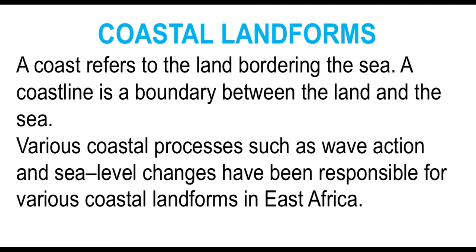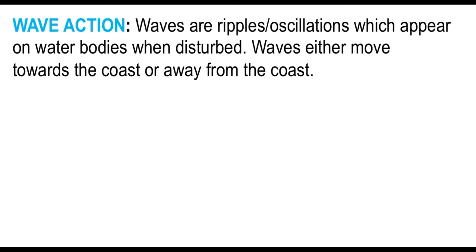What is wave action? Waves are ripples or oscillations which appear on a water body when disturbed. Waves either move towards the coast or away from the coast. A number of factors disturb the water body — wind, volcanicity or volcanism, earthquakes, and ships that move on water bodies, causing waves to move towards and off the coast.